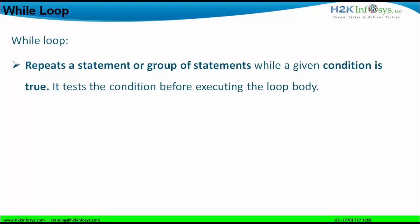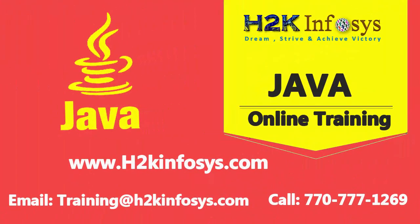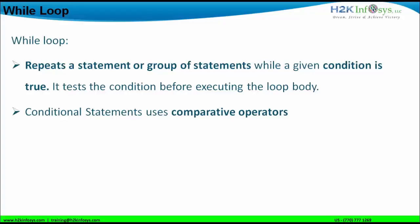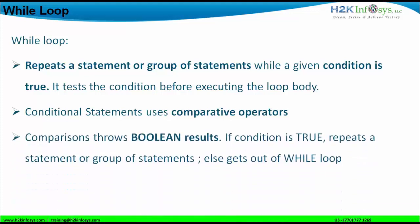The while loop works in a particular way: it first checks the condition. If the condition is true, the loop body — meaning the lines of code or group of statements — will be executed. The moment the condition becomes false, the loop body will not be executed and the compiler will exit the while loop. To check the condition, we use comparative operators, which produce a boolean result. If the boolean result is true, the loop body executes; otherwise, the compiler terminates the loop.